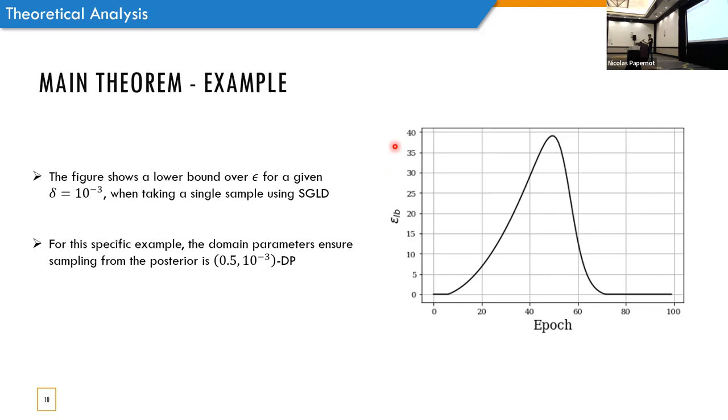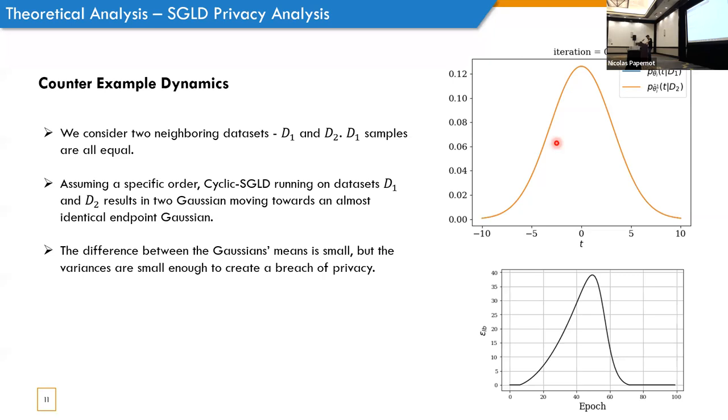So, let's look on a little example. This is a specific instantiation of the Bayesian linear regression problem for a specific choice of parameters. And for this example, we show that sampling from the posterior is 0.5 differentially private. And in this figure, we can see the privacy when releasing a single sample when running SGLD. And we can see that the lower bound reaches like 38, which is not differentially private at all. So, while the posterior is private, 0.5, the lower bound is much higher.